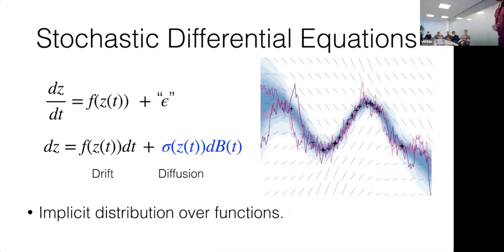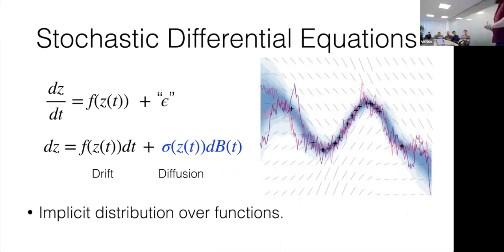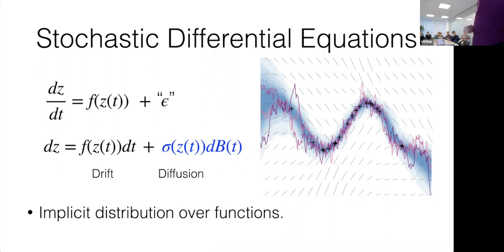Just like a Gaussian process defines a distribution over functions, but in a way that I don't have access to the joint probability — that's our first major loss compared to GPs: we've lost closed-form likelihoods over functions. Once I specify an initial starting point, a drift, and a diffusion, I've specified a joint distribution over function values everywhere. The drift function is shown by little gray arrows indicating where we send the function, and at every time step we add a little noise; the purple lines are sample trajectories from a particular SDE with a fixed noise level.